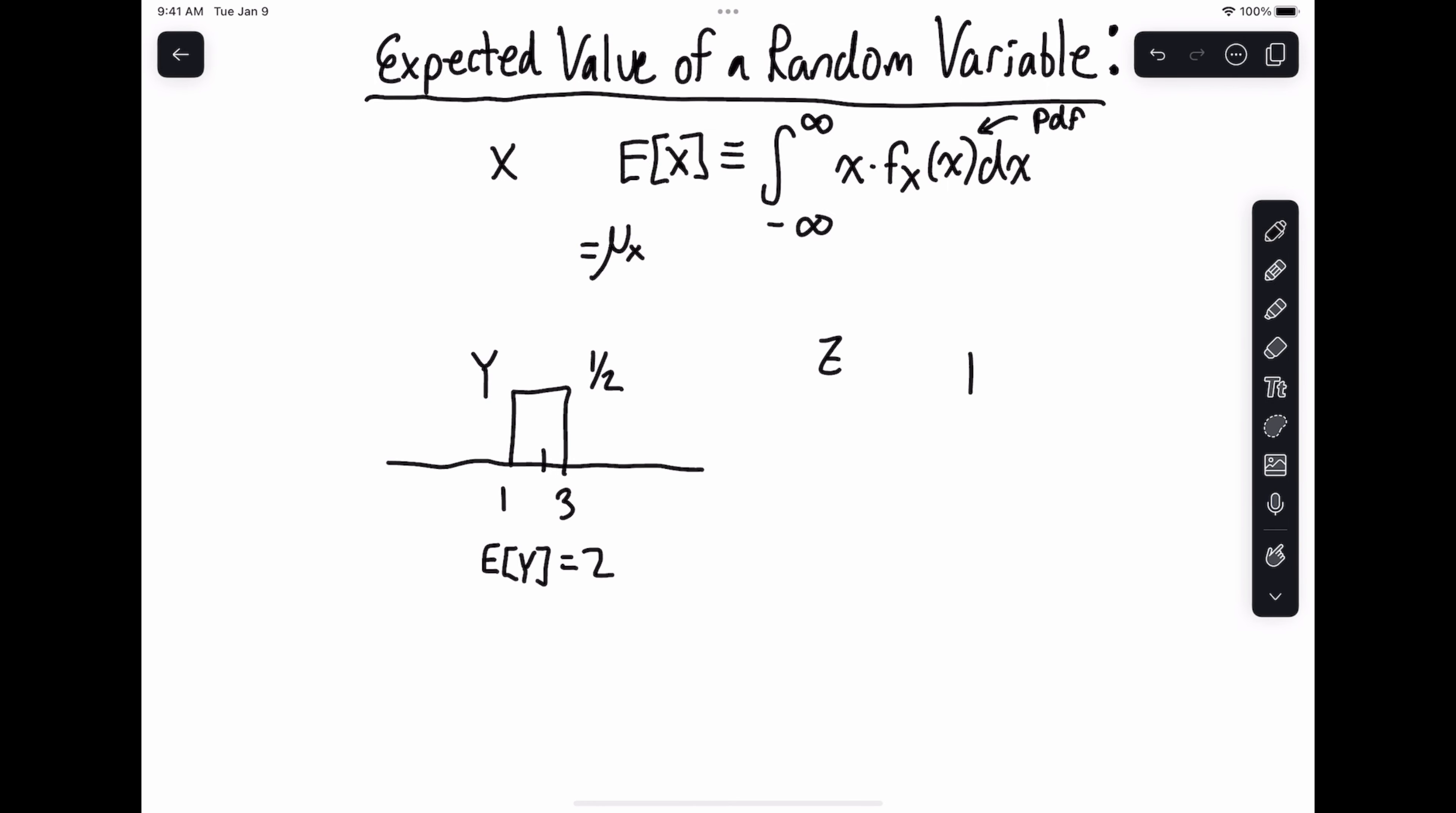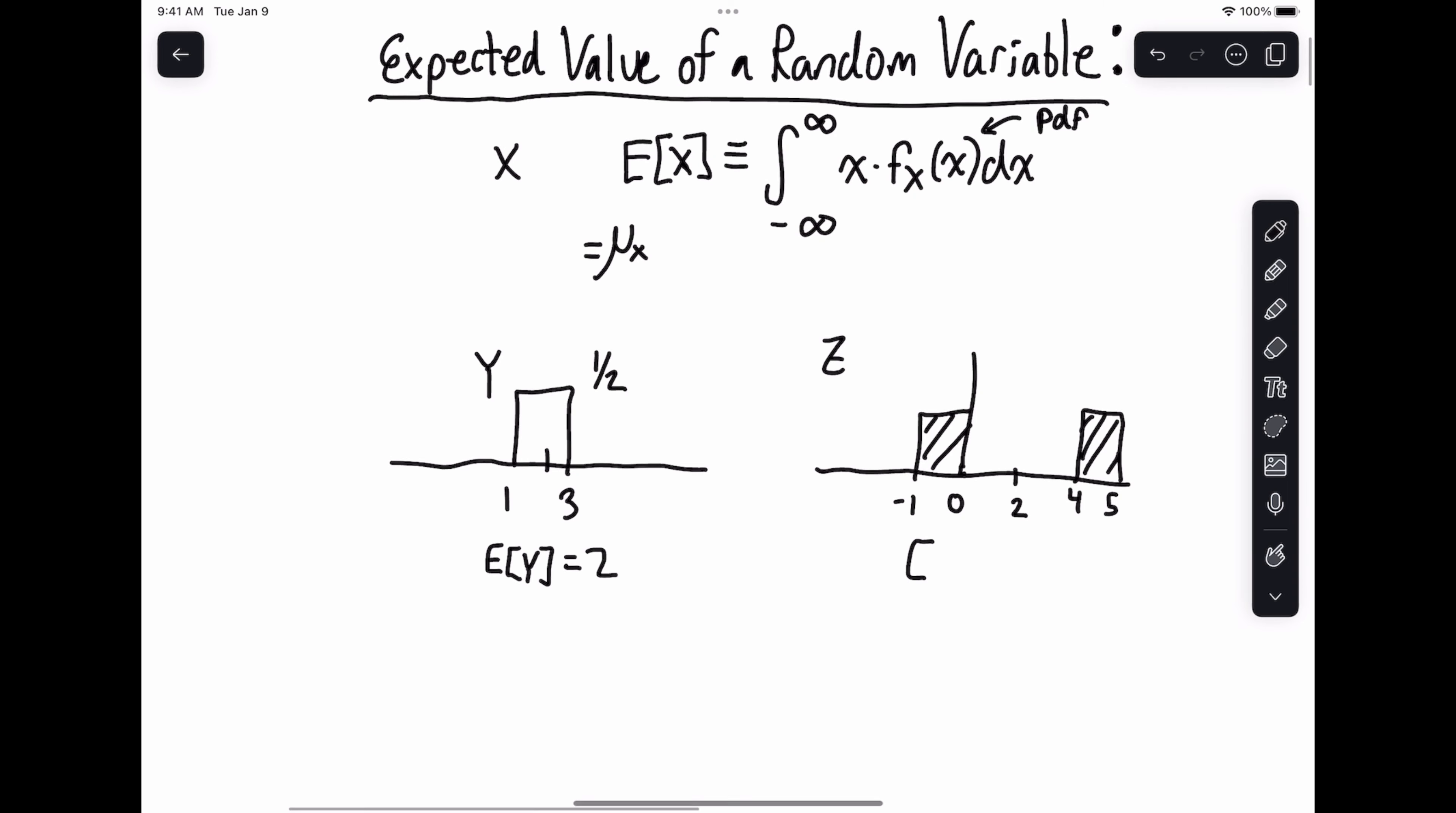And then of course I can have a random variable z that looks like this. It basically from zero to minus one, and then from four to five like this, its expectation, its expected value is also two. So this would still be the point that balances it because these guys kind of cancel each other out. The expected value of z equals two.